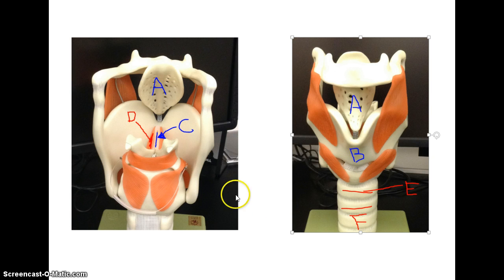Looking at the larynx up close, this is the posterior view. This is the anterior view. From the anterior view, you see the thyroid cartilage here. You see the trachea, and then you see the C-rings of the trachea. And here you see the epiglottis.